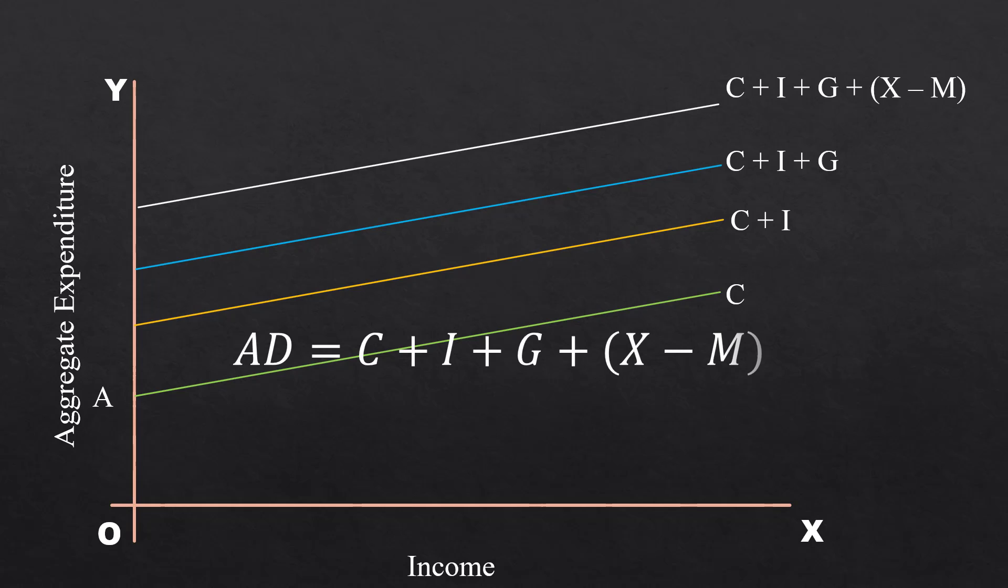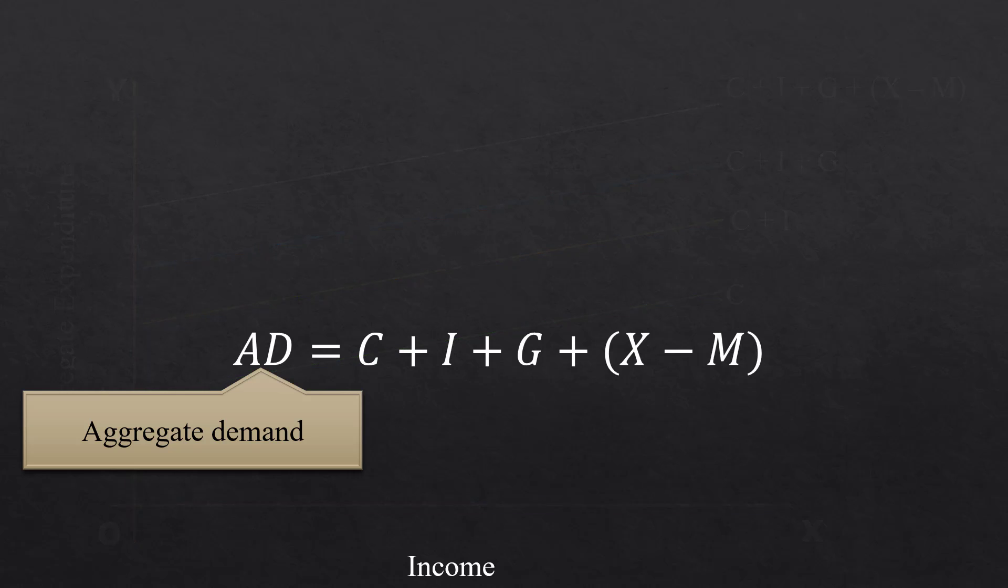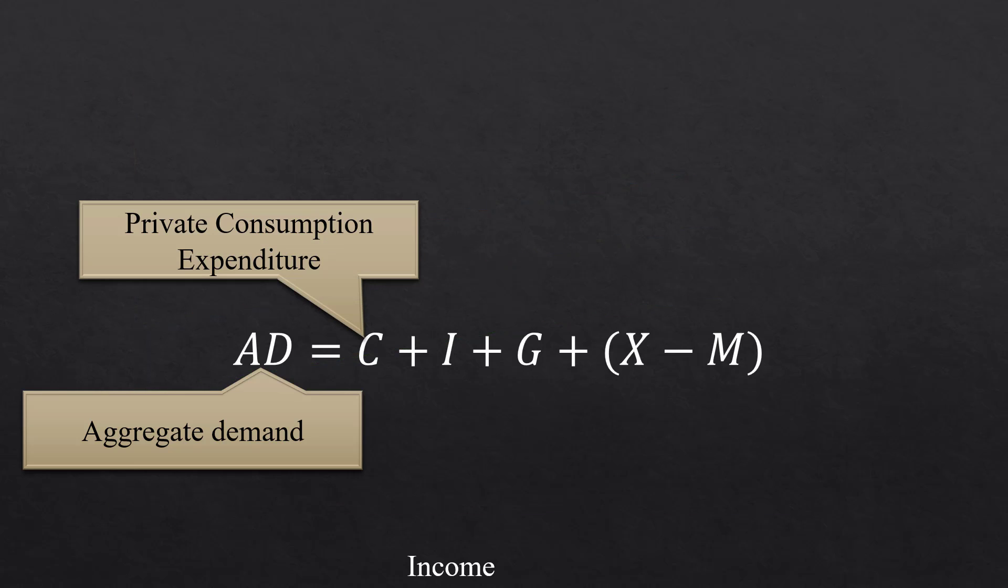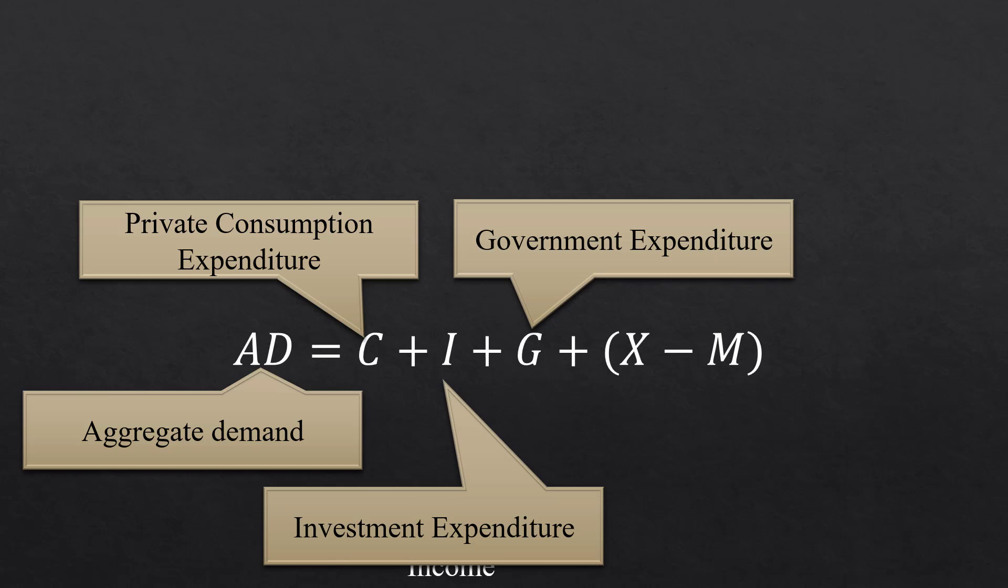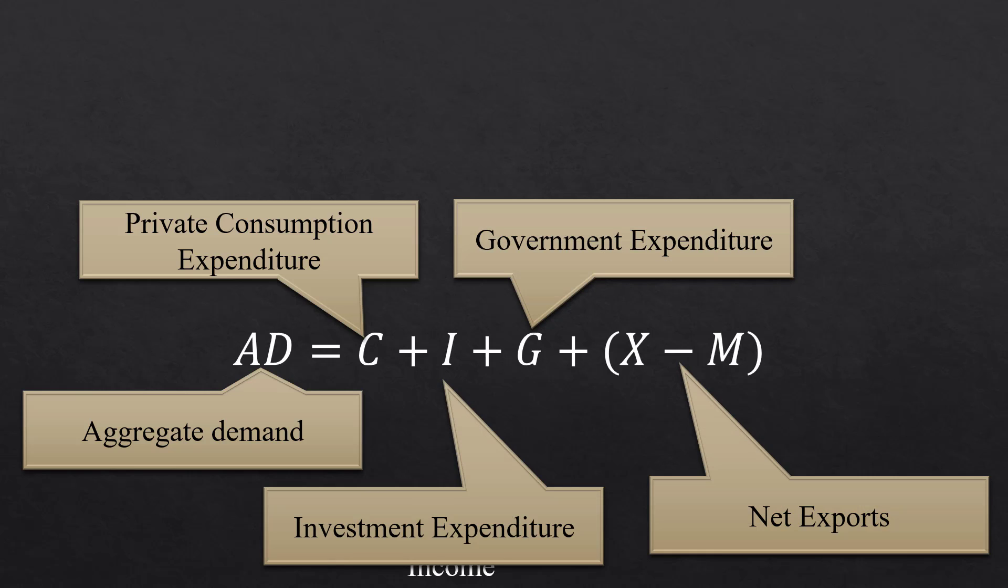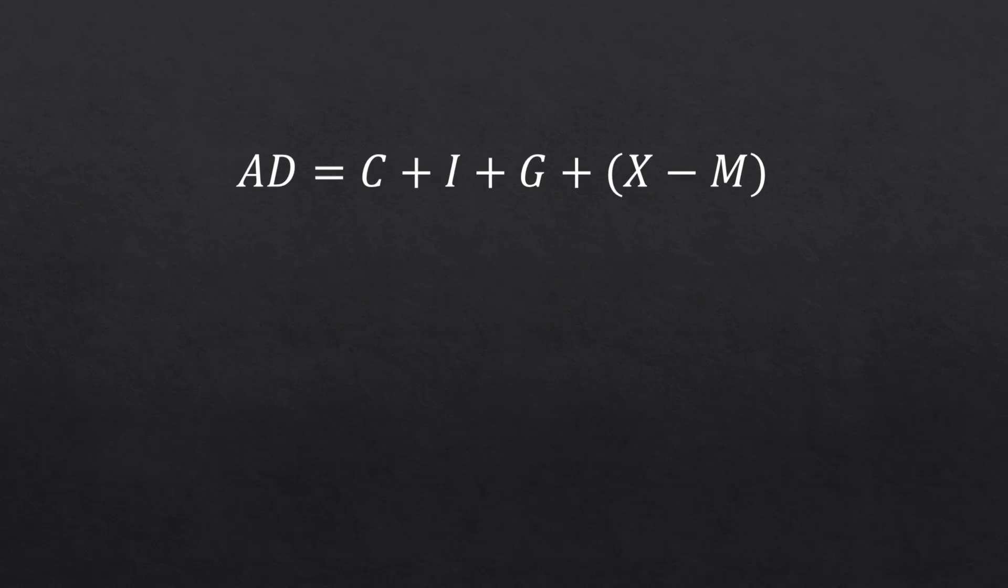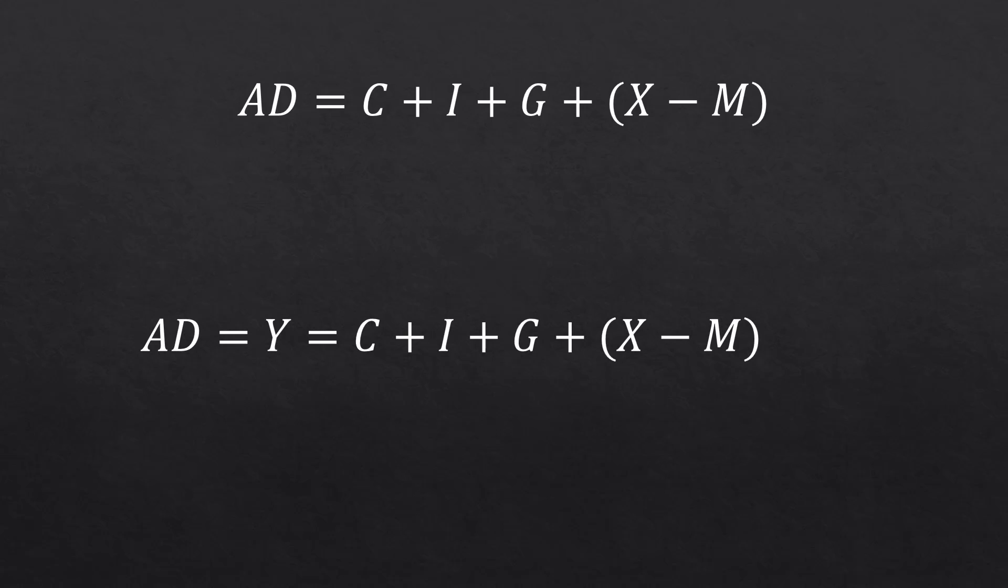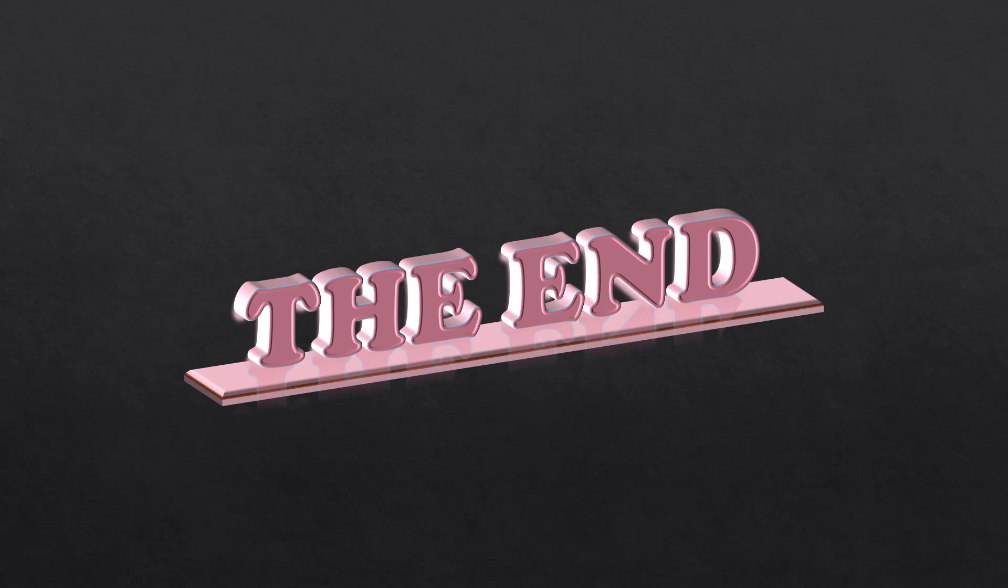Thus, aggregate demand is the sum of four components: Private consumption expenditure, Investment expenditure, Government expenditure and Net exports. Since sum total of all the expenditure is equal to national income, it can also be stated as AD equal to Y equal to C plus I plus G plus X minus M. Our discussion on aggregate demand ends here. We shall meet again.